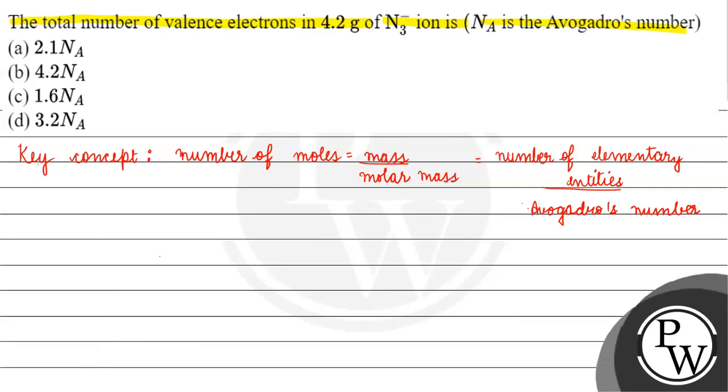Mass is given. Azide ion is 4.2 gram. If we talk about molar mass, molar mass is basically equals to 1 nitrogen atom we have 14 gram per mole, right, atomic mass. So 3 nitrogen atoms we have 14 into 3 or 42 gram per mole.